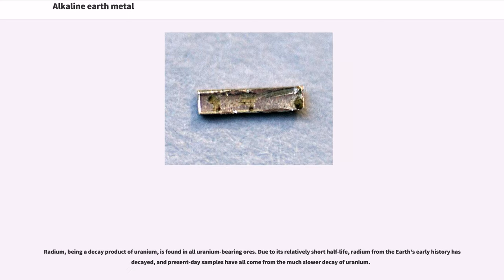Radium, being a decay product of uranium, is found in all uranium-bearing ores. Due to its relatively short half-life, radium from the Earth's early history has decayed, and present-day samples have all come from the much slower decay of uranium.